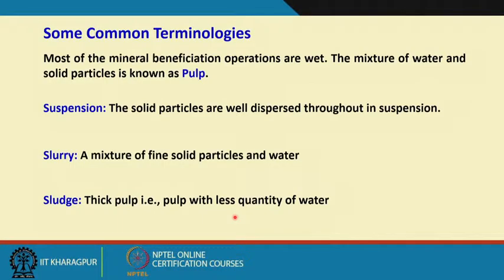For that, we need to apply a mass balancing approach. Mass balancing approach means input is equal to output, based on that principle. Before we go to the subject, let me explain some of the common terminologies we use in the mineral processing industry. I have already uttered these words many times, and probably by now you are getting confused about what they mean, so I want to give an explanation.